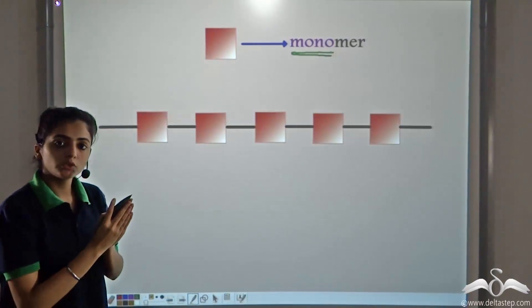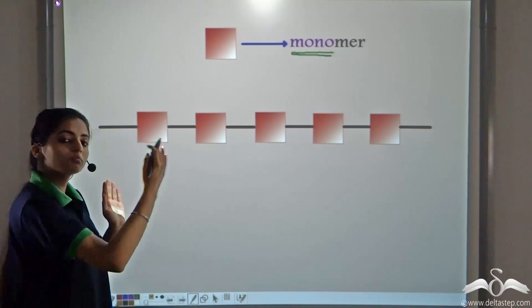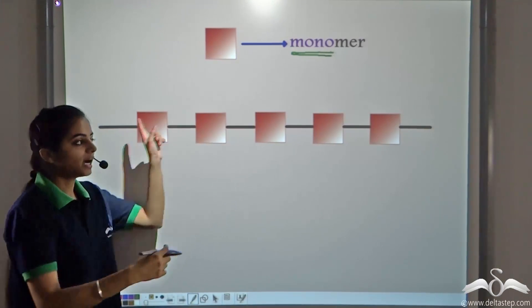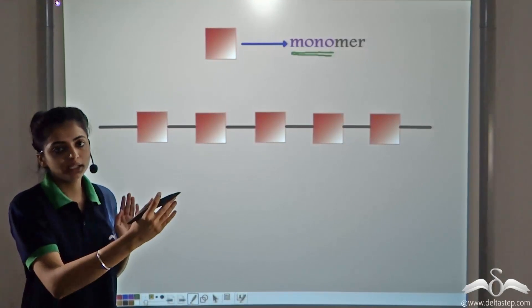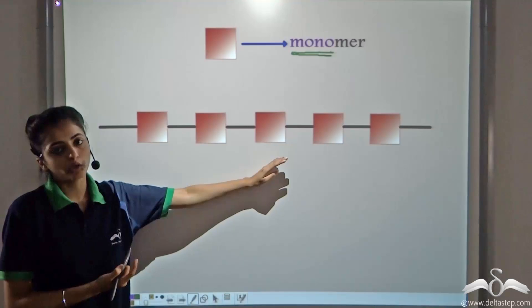So when one unit, or one molecule, comes together, it forms a very long chain, that we call a polymer. Poly means many. So when many monomers come together, they form a polymer.